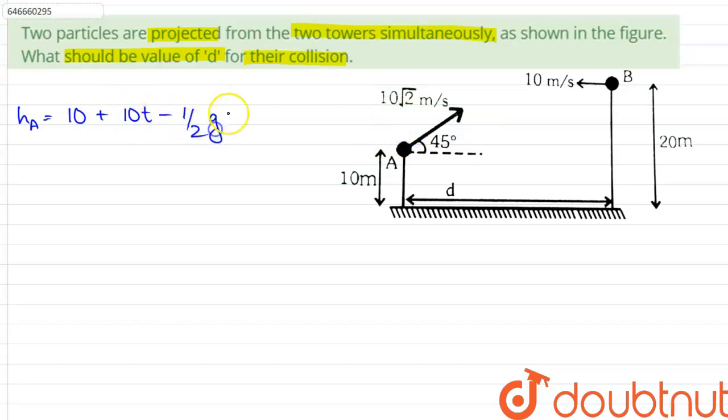And similarly, the height of particle B at any given instant will be given by 20 minus half of gT squared. If A and B were to collide, HA and HB should be equal.